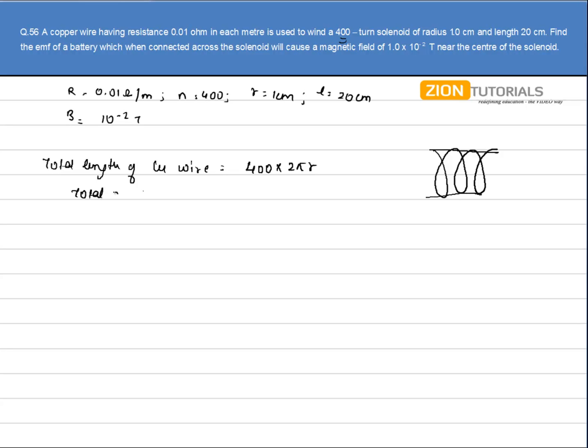So the total resistance will be resistance per unit length into 400 into 2 pi r. Now, if EMF battery E is connected across the solenoid, current in the loop will be given by V by R, that is EMF E divided by capital R into 400 into 2 pi r.